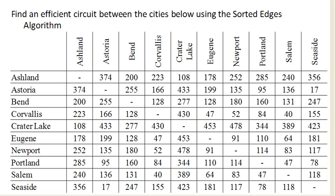We're going to try to find an efficient circuit between these cities in Oregon using the Sorted Edges algorithm. The Sorted Edges algorithm says we should list all the edges in order from cheapest to most expensive, and I've already done that. Notice that this is symmetric, so I'm only going to be looking at the upper triangle here, because everything below is a mirror of that.